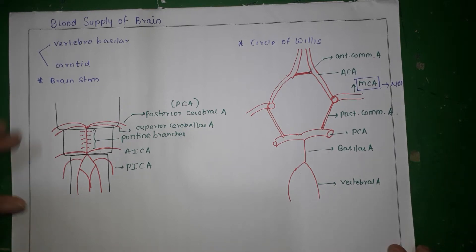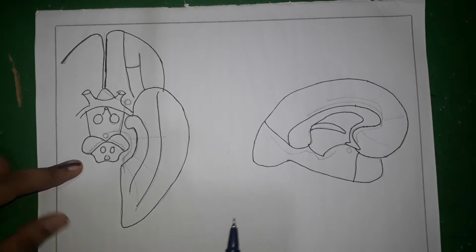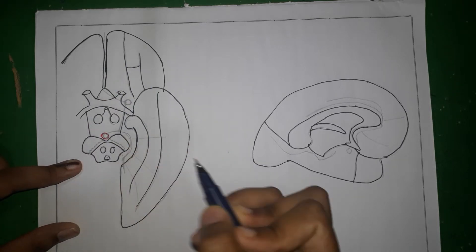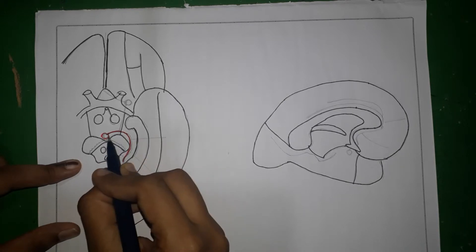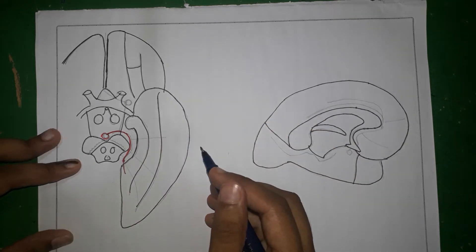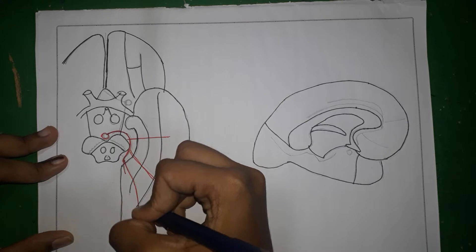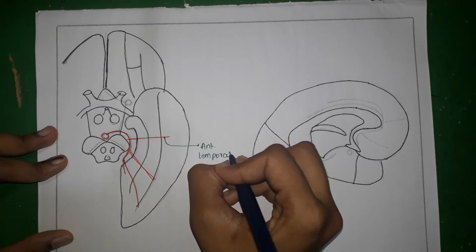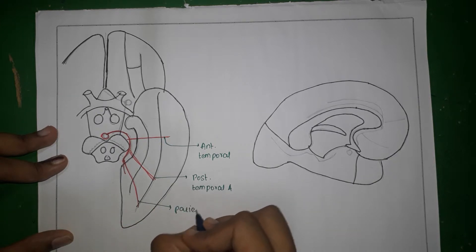Now let's focus on the blood supply of different parts of the brain. In this diagram showing the base of the brain, the basilar artery gives the posterior cerebral artery, which winds around the surface of the midbrain and then passes posteriorly. It gives branches: the anterior temporal branch, the posterior temporal branch, and the parieto-occipital branch.